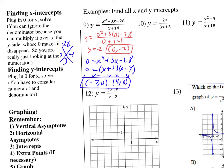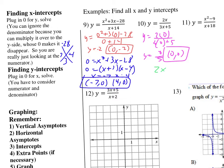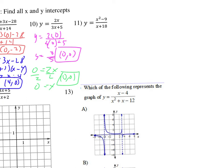Number ten: for the y-intercept, plug in 0 for x, giving 0 over 5, which is 0. So the y-intercept is (0, 0). For the x-intercept, set the numerator equal to 0; dividing by 2 also gives 0. So the x-intercept is also (0, 0) — not surprising, since the origin can be both an x-intercept and a y-intercept.